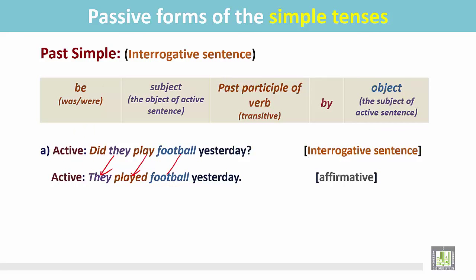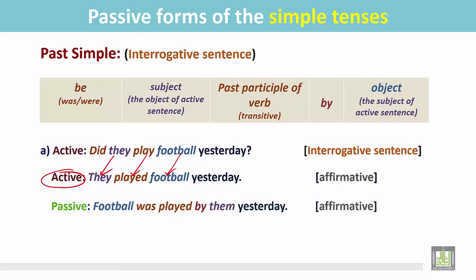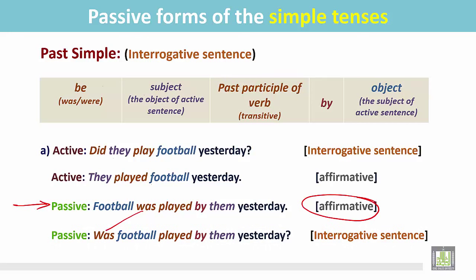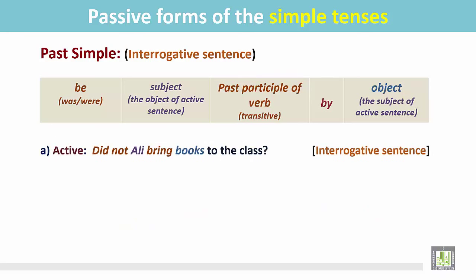To make this active interrogative into passive, we first change it into a statement: 'They played football yesterday.' We identify the subject, the verb in the past simple, and the object. Now we change this active sentence into passive: 'Football was played by them yesterday.' The subject is singular, so we place 'was', then the past participle, the preposition 'by', and the subject of the active becomes the object 'them'. Since this is still affirmative, we make it interrogative by placing the auxiliary verb before the subject: 'Was football played by them yesterday?'